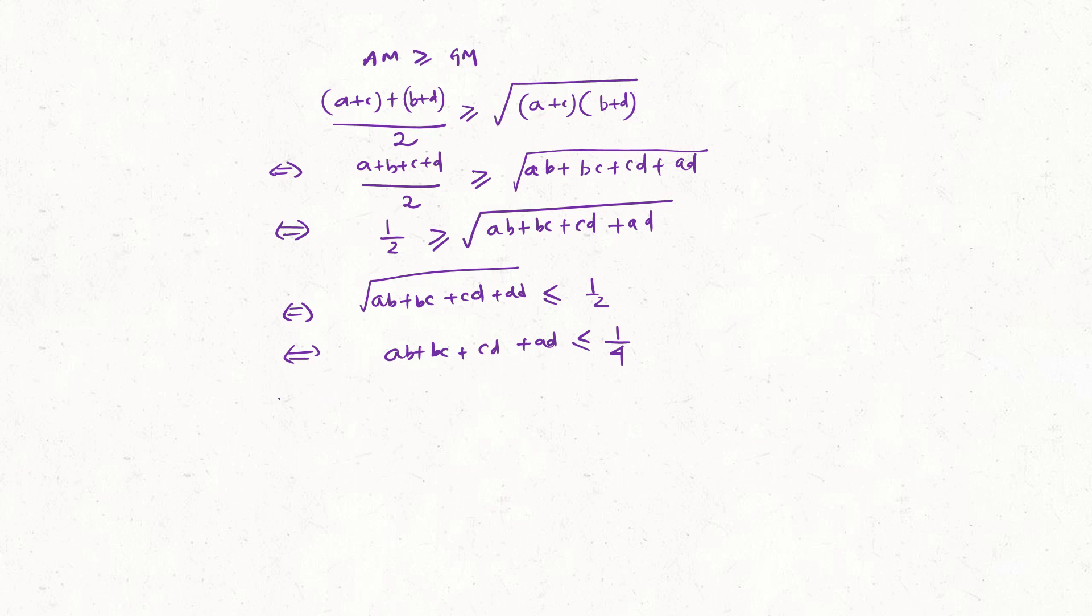As we know, A, B, C, D are all positive reals. This expression can be written as AB plus BC plus CD less than or equal to 1 by 4. Hence this is proved.